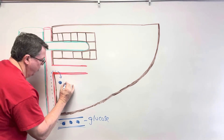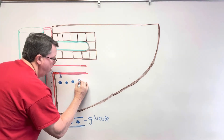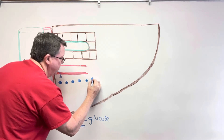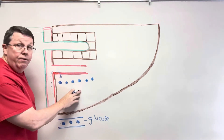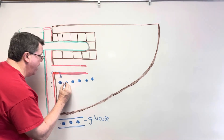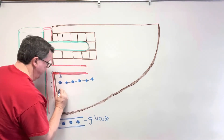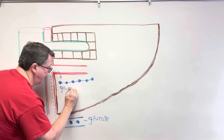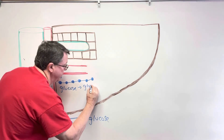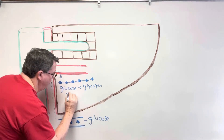Here are my glucose molecules right here. The way the liver is going to store these is by bonding them together and forming glycogen. So we go from individual glucose to glycogen, and that process is called glycogenesis.